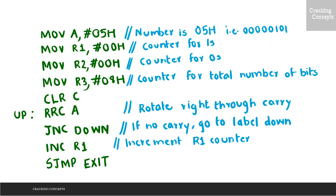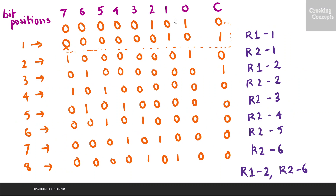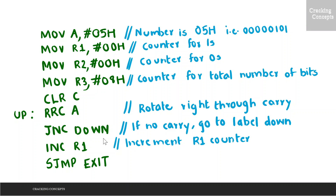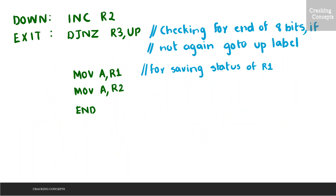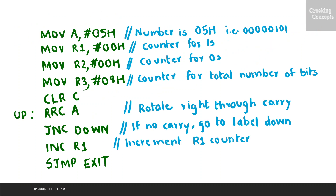Now let us move on to the first rotation. Before that, we will see the initial value of the accumulator and the carry flag. Bit positions are marked from 0 to 7 and the carry flag value is 0. After the first rotation, the value in the least significant bit is copied to the carry flag, and the carry flag value is copied to the MSB of the accumulator — so the carry bit is 1. Since the carry bit is 1, we increment R1, making R1 equal to 1, and jump to the label exit where R3 is decremented by 1, making R3 equal to 7. Since 7 is not 0, we go for the second rotation.